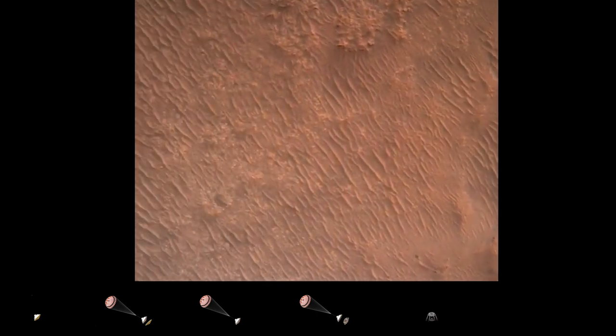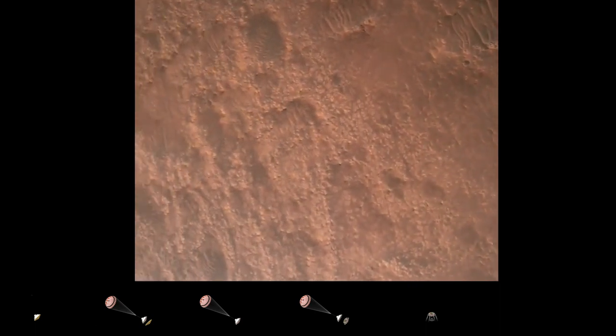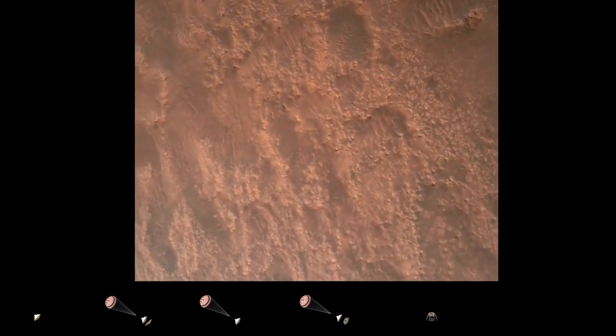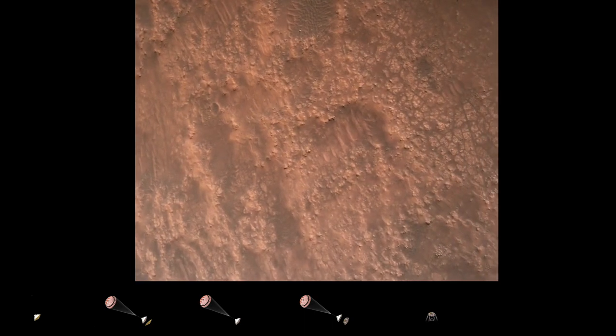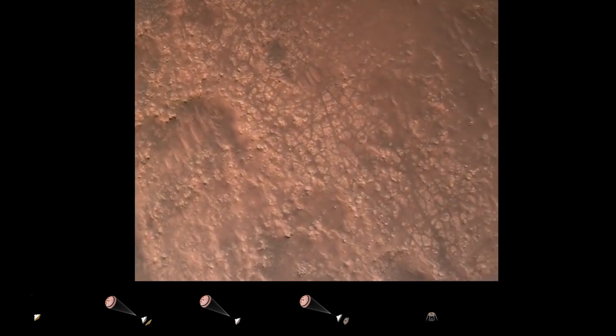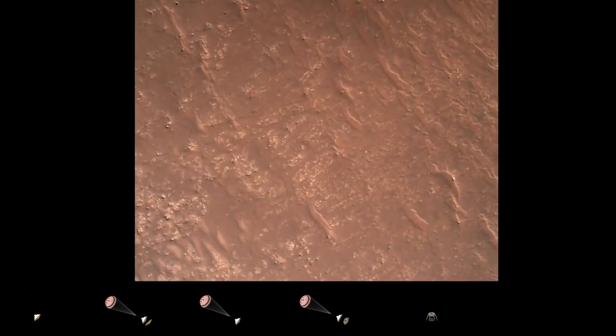Current velocity is about 75 meters per second at an altitude of about a kilometer off the surface of Mars. We have completed our terrain relative navigation. Current speed is about 30 meters per second. Altitude of about 300 meters off the surface of Mars.